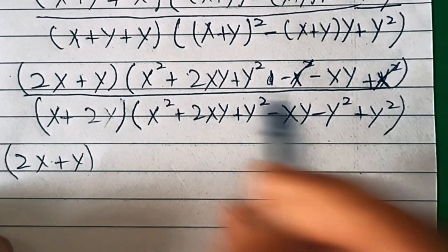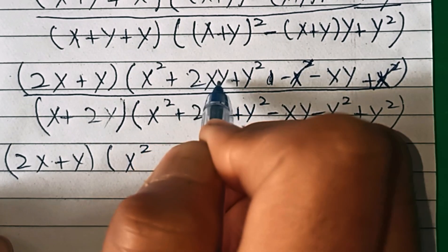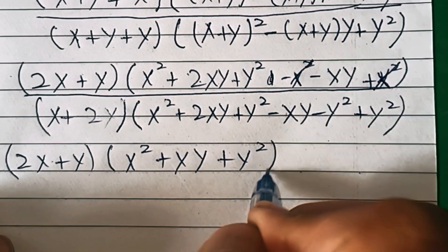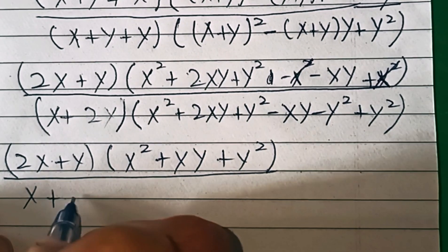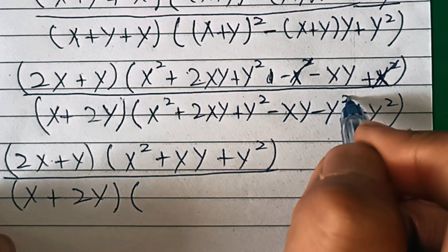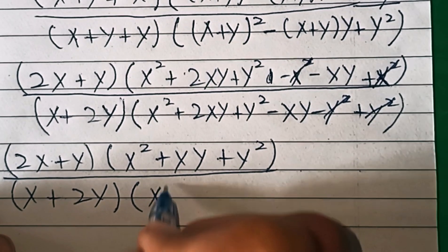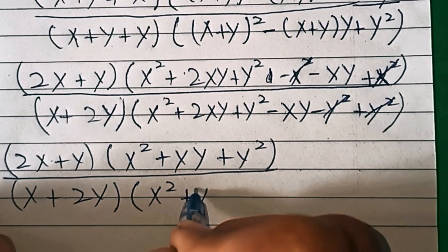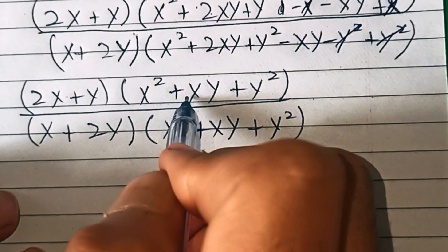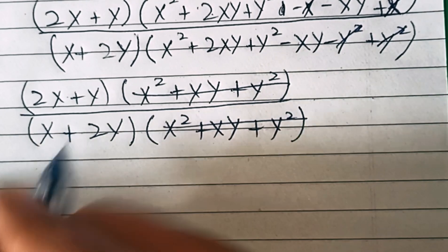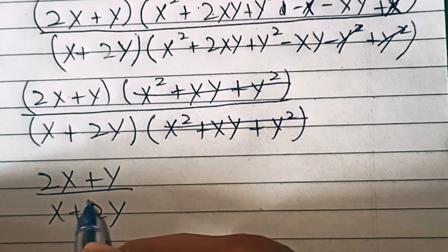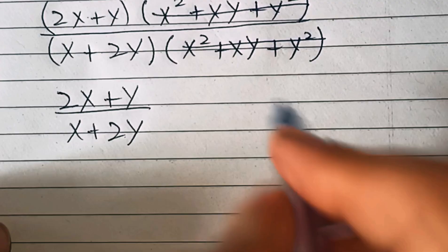The x² terms cancel and twice xy minus xy gives plus xy, leaving x² + xy + y² in the numerator bracket. In the denominator, y² terms cancel and similarly we get x² + xy + y². We can then cancel the common factor (x² + xy + y²), leaving 2x+y over x+2y.